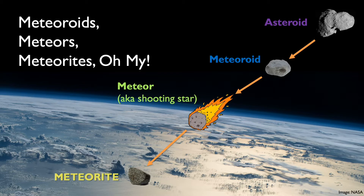The majority of rocks come from asteroids — rocky bodies that aren't big enough to be planets. A piece of rock broken off of an asteroid would be called a meteoroid. That same rock is then called a meteor when it enters Earth's atmosphere, also called a shooting star. But it's only called a meteorite once it hits Earth's surface.